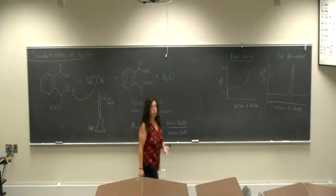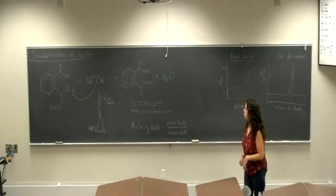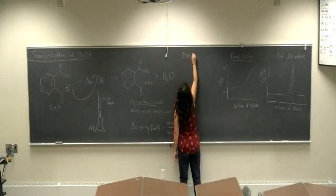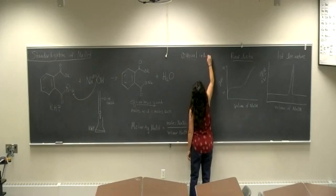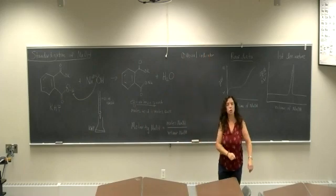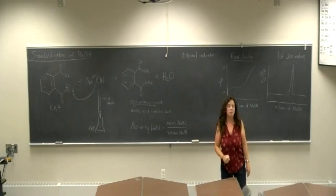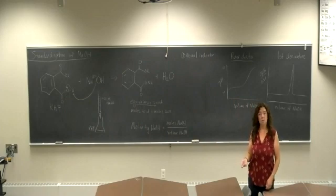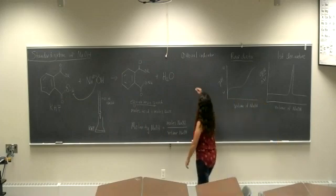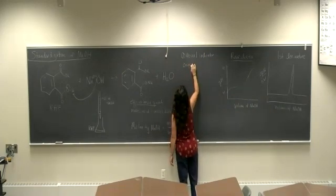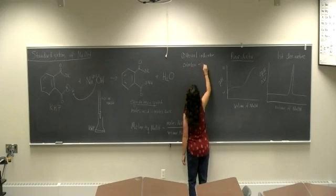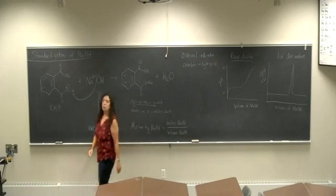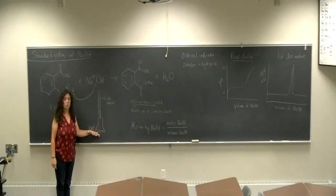We'll be doing this in two different ways. The first way you'll do this is with a visual indicator. And the visual indicator you'll be using is phenolphthalein. And phenolphthalein is colorless at acidic pHs, and then it'll be pink at basic pHs.